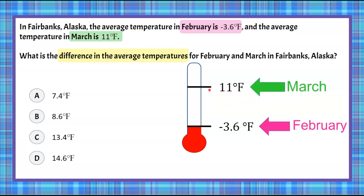We want to find the difference between these two values, which is also the distance between them on a number line. A thermometer is a vertical number line. So we'll go from negative 3.6 up to zero degrees Fahrenheit, and then up another 11 degrees to 11 degrees Fahrenheit.